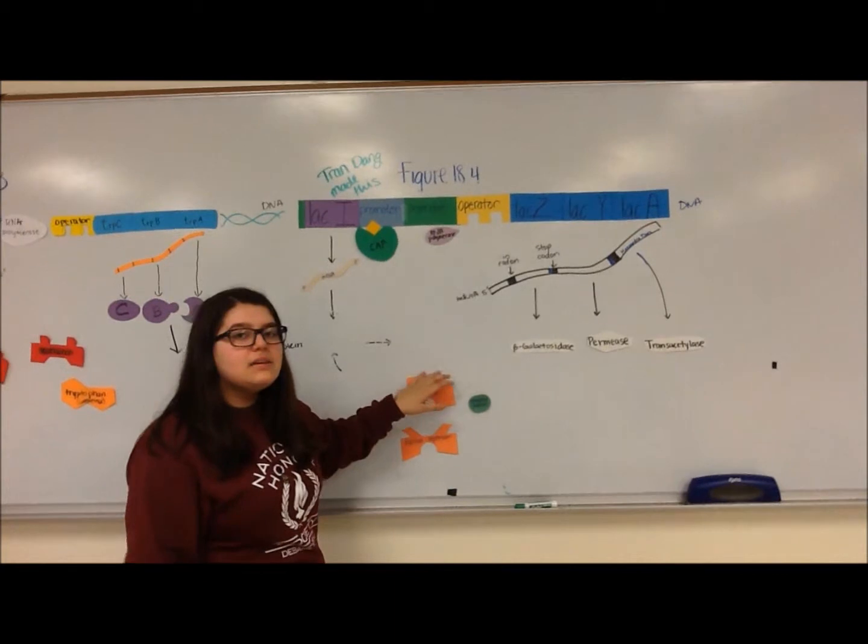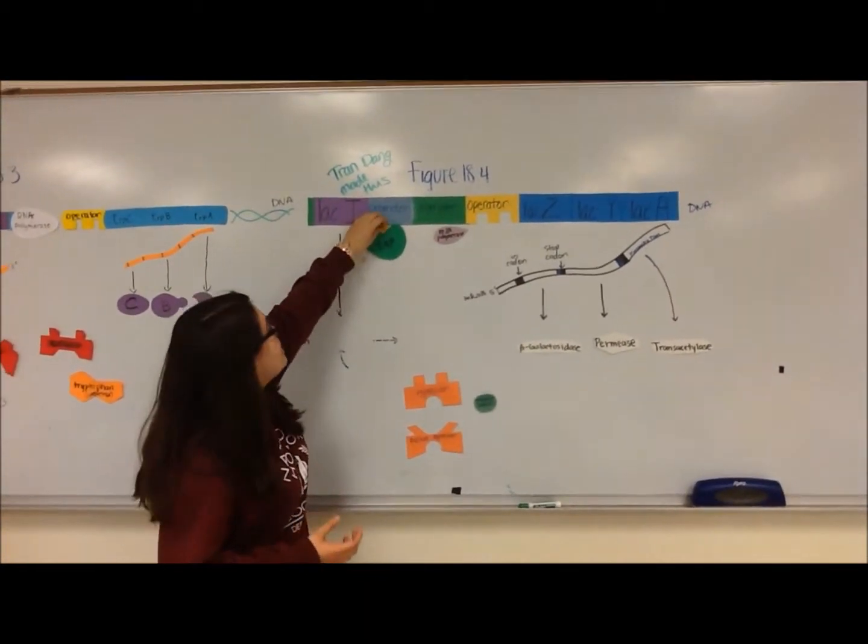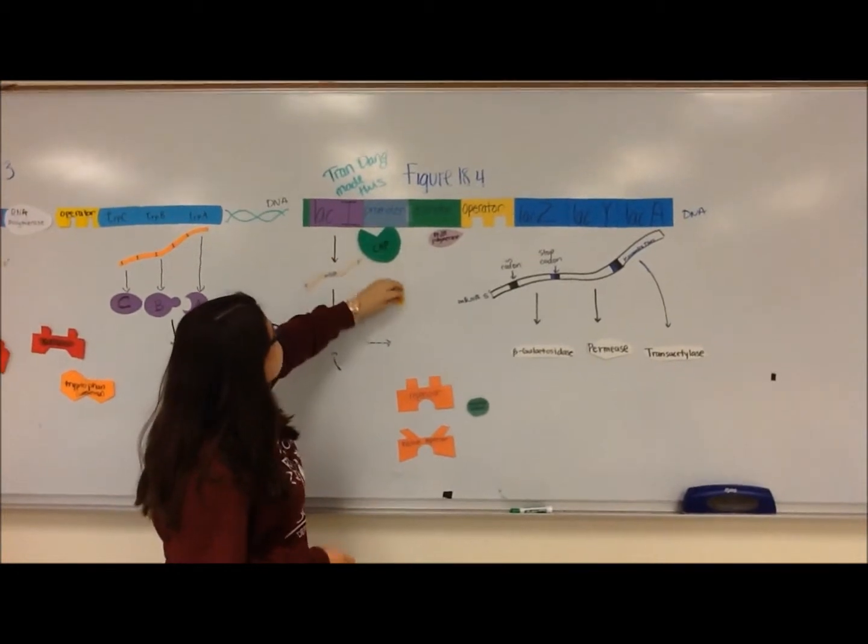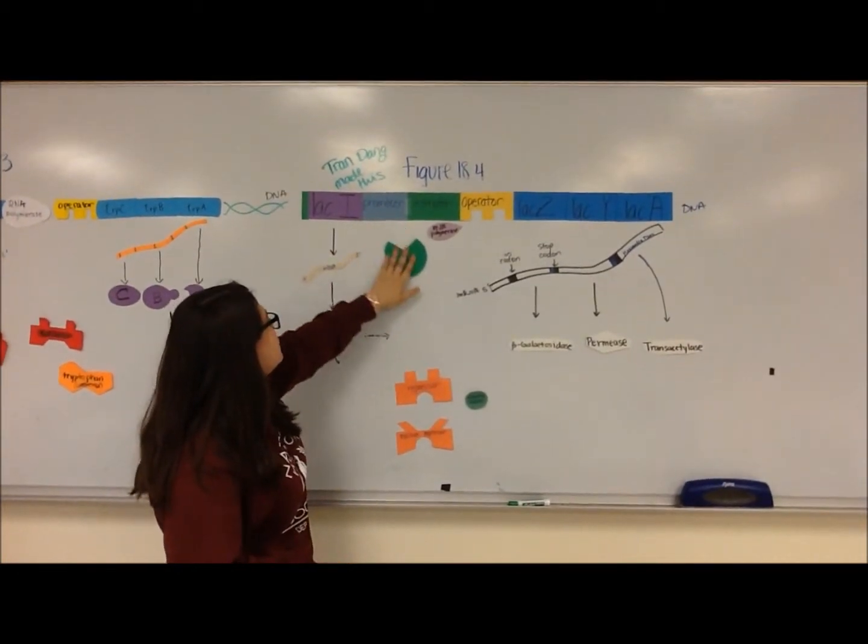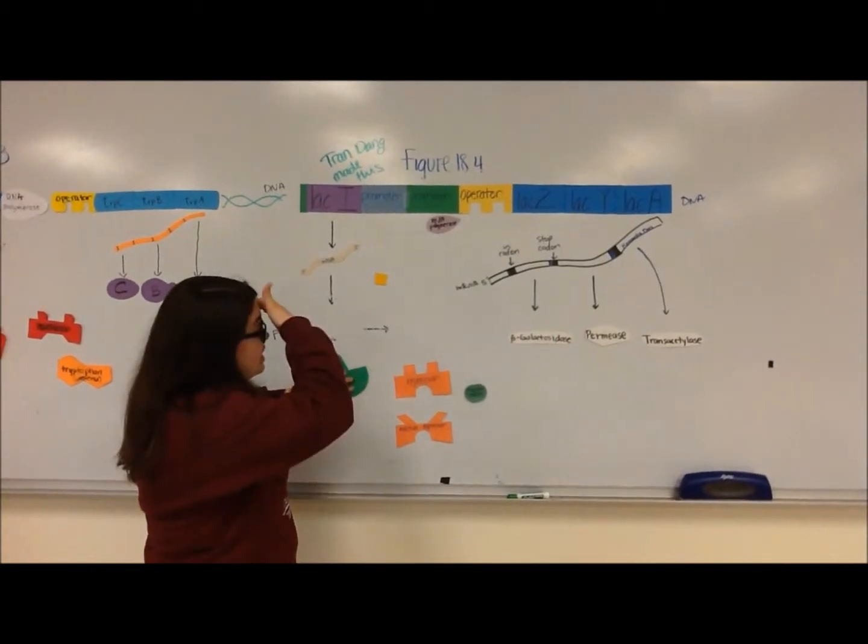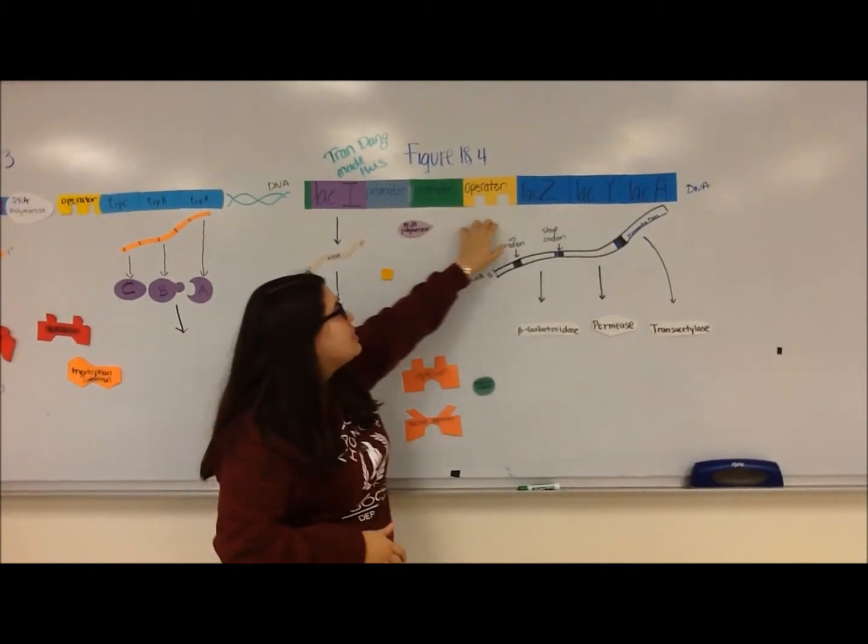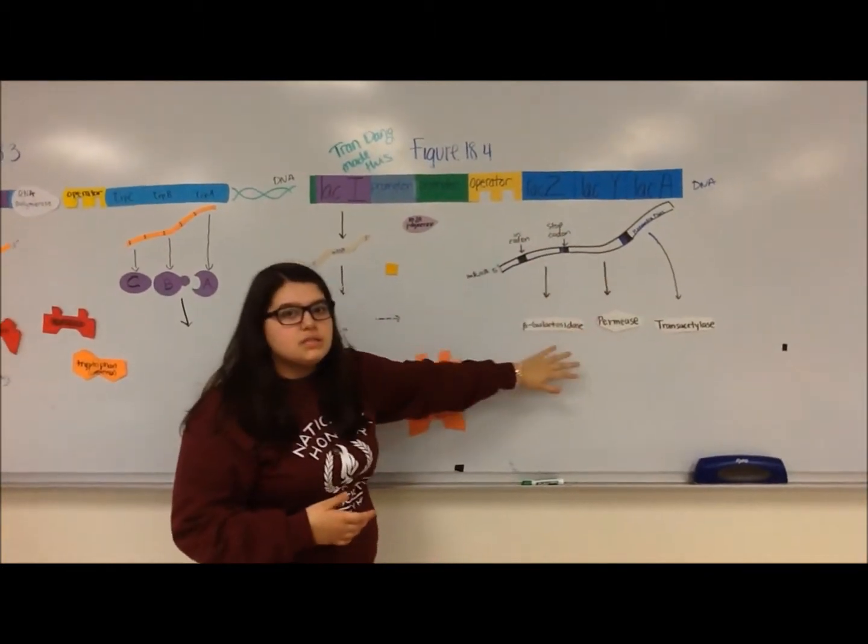When there are high levels of glucose, there is less accumulation of cAMP, which means it dissociates from the CAP regulatory protein, returning it to its natural inactive state. The RNA polymerase can no longer bind to the promoter and allow for the transcription of these genes.